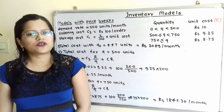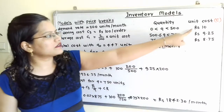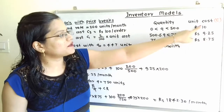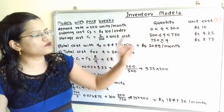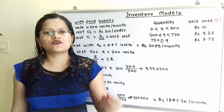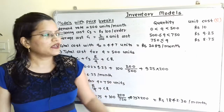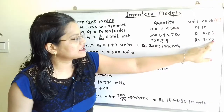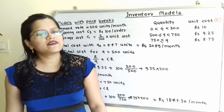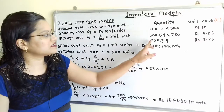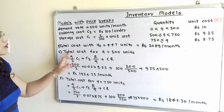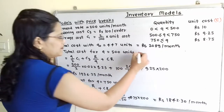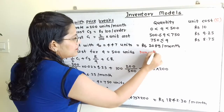We now calculate the total cost at the price break points. The unit cost drops from Rs.10 to Rs.9.25 when Q = 500, and from Rs.9.25 to Rs.8.75 when Q = 750. So we calculate the total cost at Q = 500 and Q = 750, both being non-optimal lot sizes.